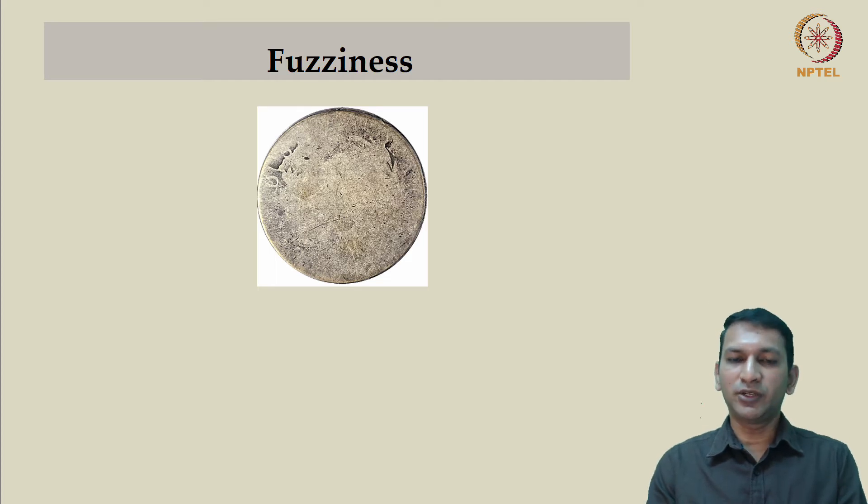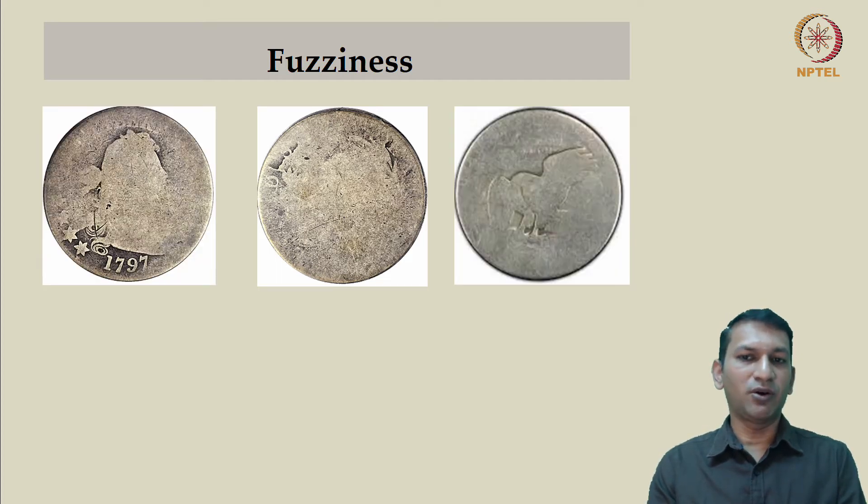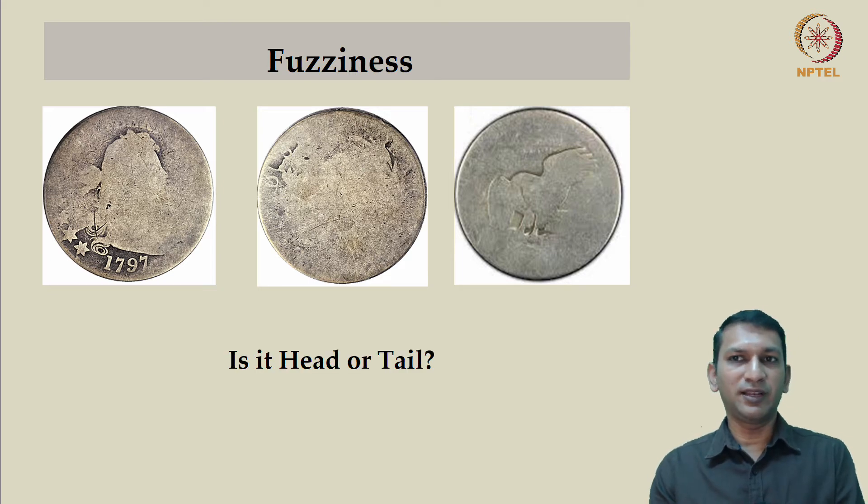It could have been this coin that you picked up or this coin or this coin. Now, we are wondering, is it a head or a tail? Here, in fuzziness, it is not lack of information, but it is not being able to decide even with all the given information. That is what is leading to the uncertainty.